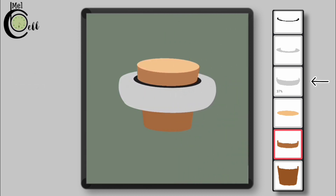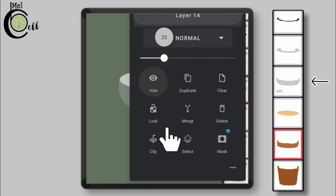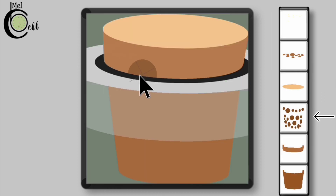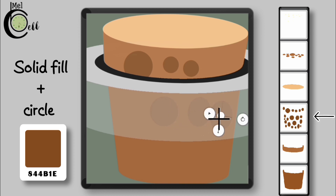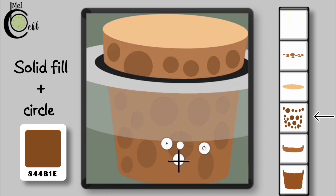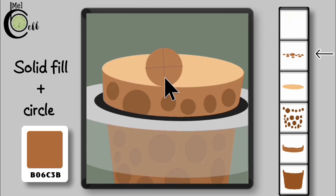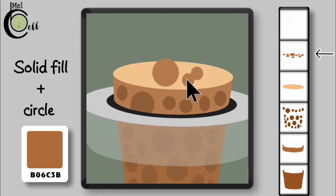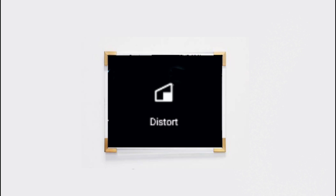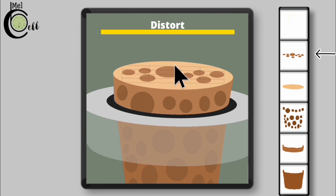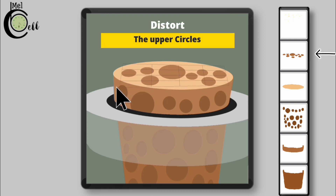Select the third elliptical shape. Draw circles. Select the third elliptical shape repeatedly as needed. Distort circles.